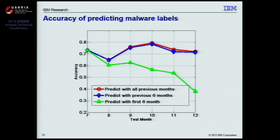However, in reality, resource limitations mean we probably wouldn't be able to accumulate all history indefinitely. A more practical strategy is to use the most recent history to train MaltonX. As shown in the blue line, if we only use the most recent six months of data, accuracy just slightly drops below using the whole history. This demonstrates the strong temporal correlation among malware samples and the potential benefit of using MaltonX to predict malware labels.